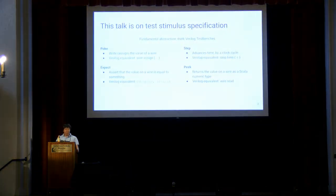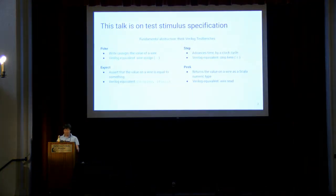But first, let me be clear on what I'm going to talk about. This project is about effective ways to specify test stimulus, not more automated techniques like constrained random generation, fuzzing, or formal verification.